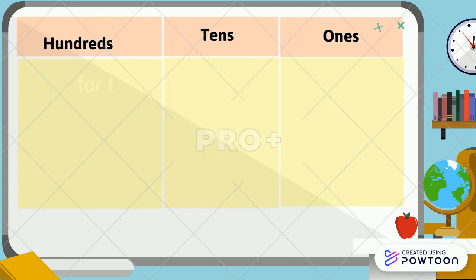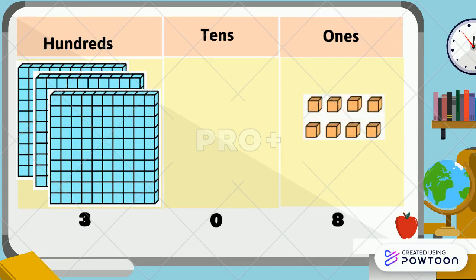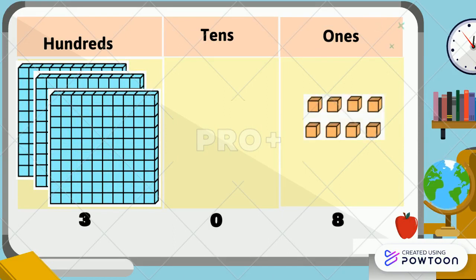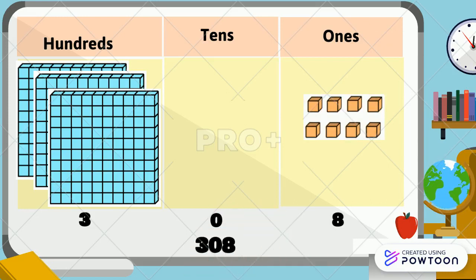Another example: there are 3 hundreds, 0 tens, and 8 ones, so we have 308 blocks.